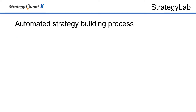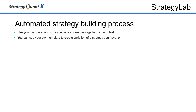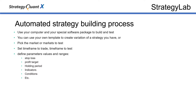You will need a computer with a Windows operating system and a special software package designed for this type of building. Either start with your own strategy or create different versions of it, or pick a market to test. Set signals and trade time frame. Define parameters, values, and ranges — you can select 10, 50, or 100. The computer will do all the work for you, using only the number of combinations you allow it to.